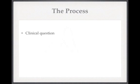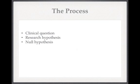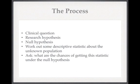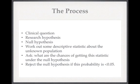Let's think about the process we've gone through. First, we came up with a good clinical question and from that worked out a research hypothesis — in our case, that the Sodibind distribution was lower than that of the general population. If we were able to know both distributions, we'd have our answer. However, if we don't know one distribution but do know the other, we can proceed anyway. We set up a null hypothesis saying both distributions are the same. We worked out a descriptive statistic about the unknown population and asked: what's the likelihood of getting this statistic if we presume the null hypothesis is true? If that probability is less than 0.05, we reject the null hypothesis.